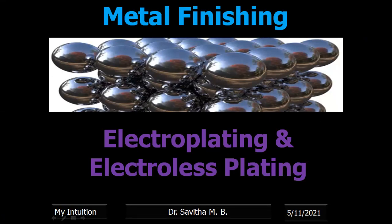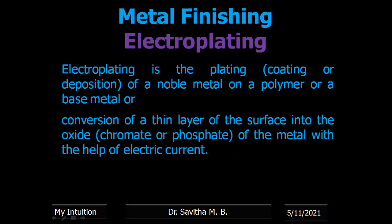In our previous video we already discussed the basic terminologies required for understanding metal finishing and the electroplating process. Electroplating means the plating of a noble metal over a base metal. The base metal can be a metal or a polymer, or it is also the conversion of the outermost layer of the metal into its oxide, chromate, or phosphate, so that the surface will be converted into a corrosion product.